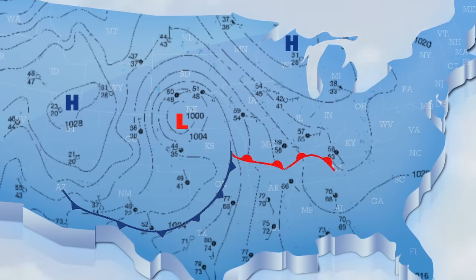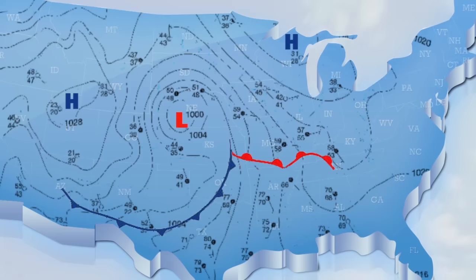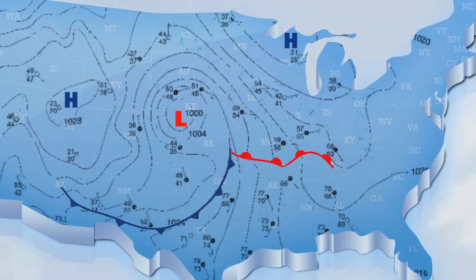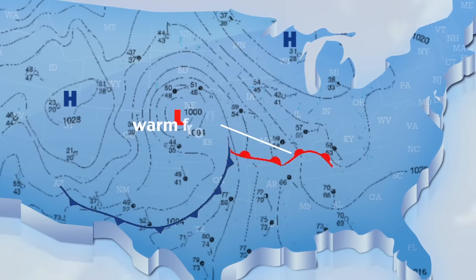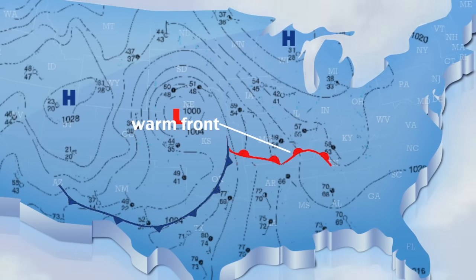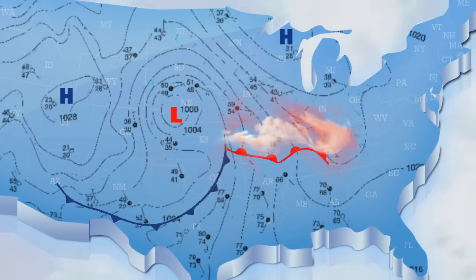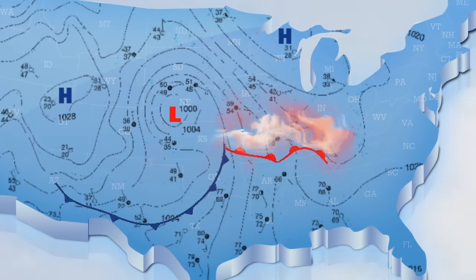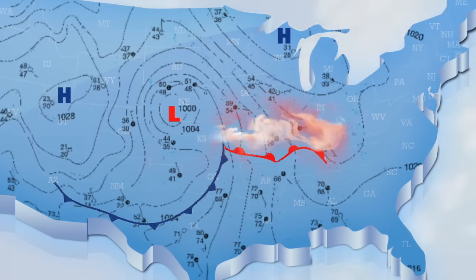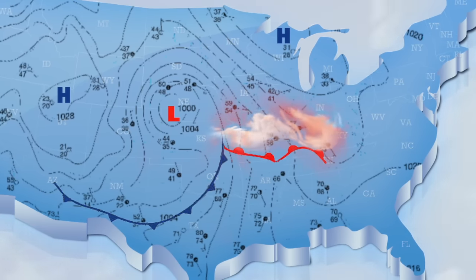The red lines with the rounded symbols are the leading edge of warmer air, and is known as a warm front. Like the cold front, the rounded edges show the direction of air movement.